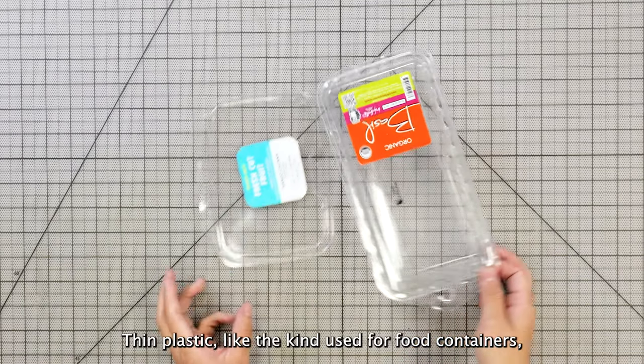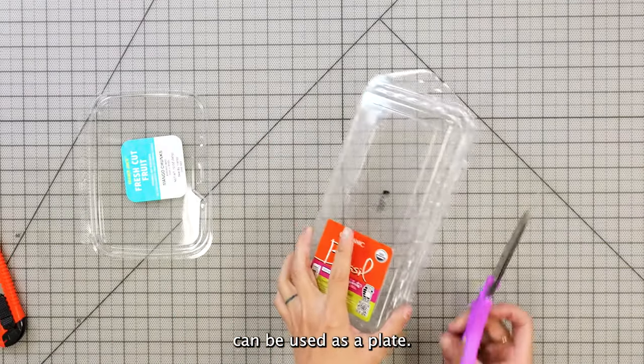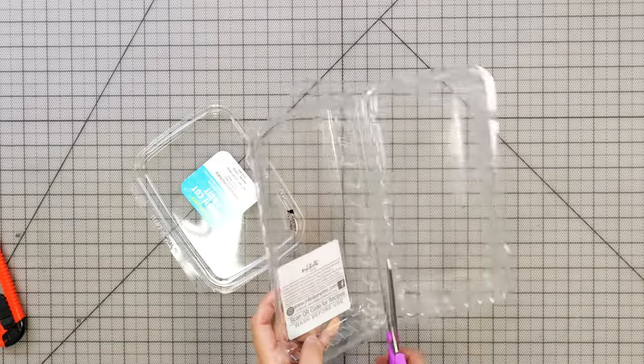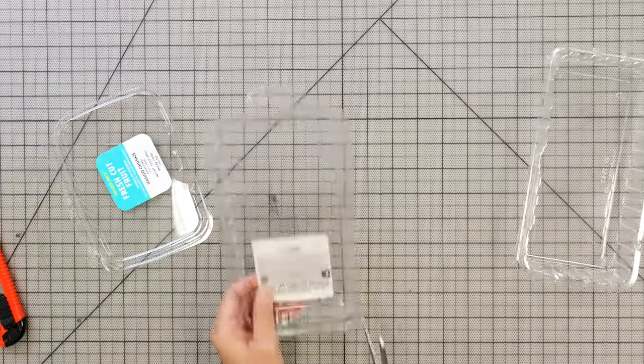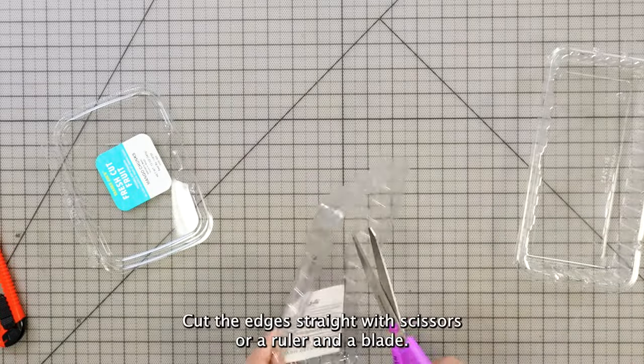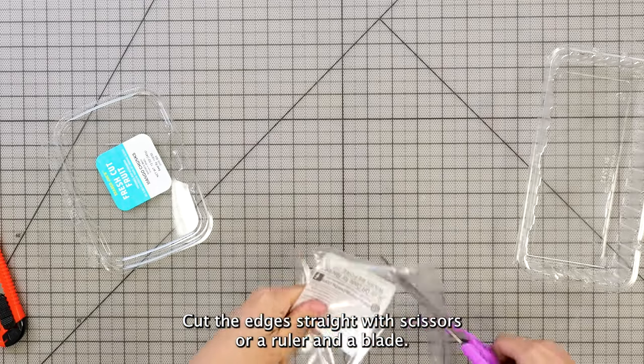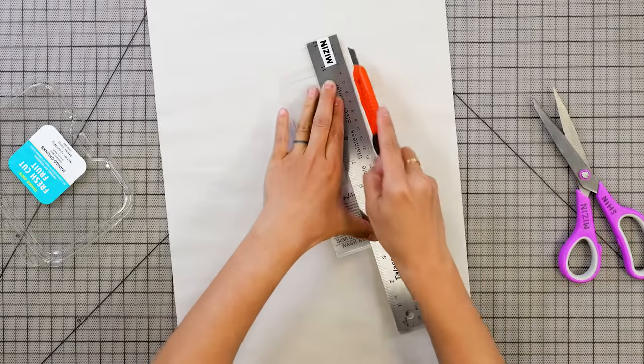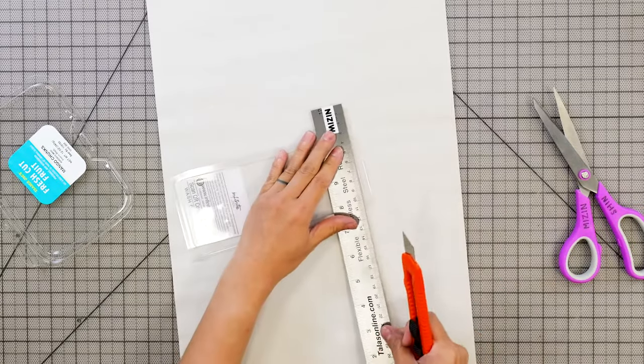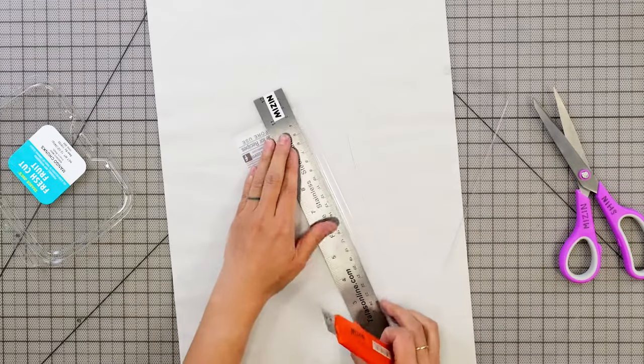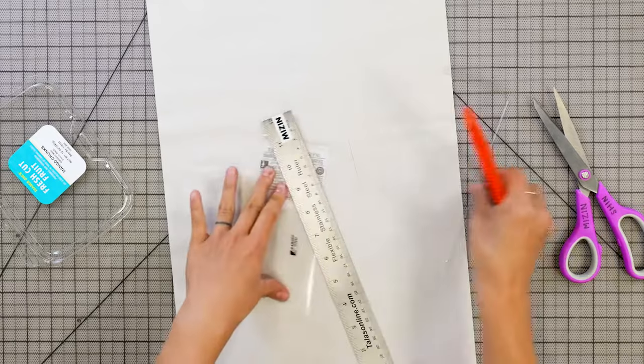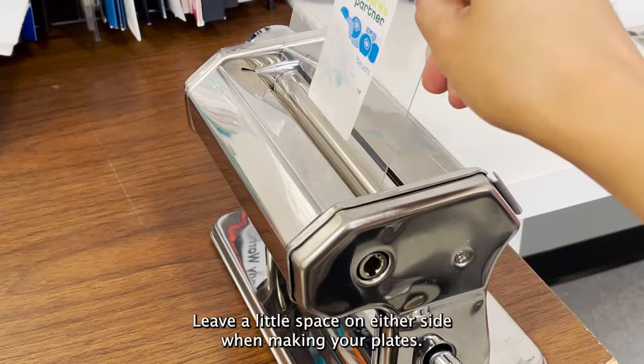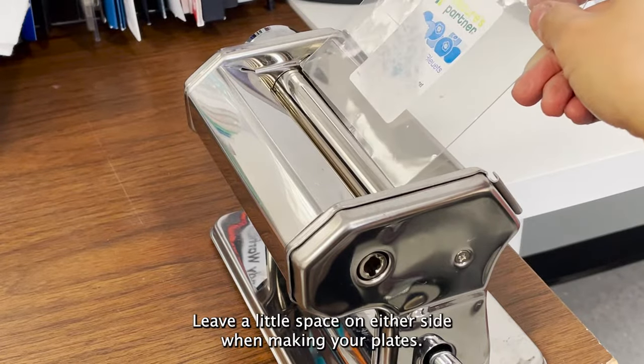Thin plastic, like the kind used for food containers, can be used as a plate. Cut the edges straight with scissors or a ruler and a blade. Make sure the plate width will fit in your press, leaving a little space on either side when making your plates.